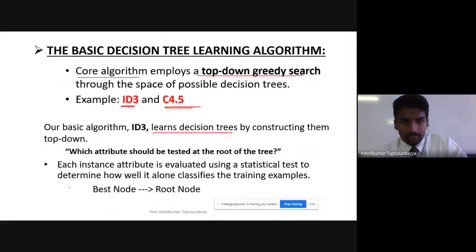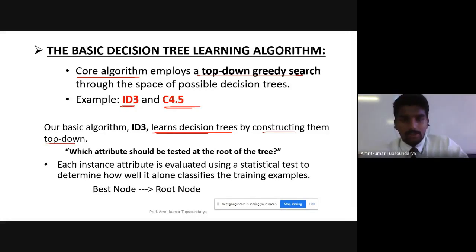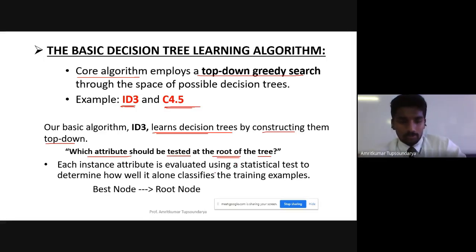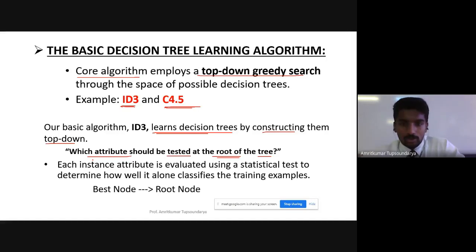The basic ID3 algorithm learns the decision tree by constructing it top-down. The biggest question is: how do we define which is the main attribute — which will be the root of the tree? Among the set of attributes we have, which attribute should be tested at the root? Selecting the right attribute is very important to arrive at the correct decision.